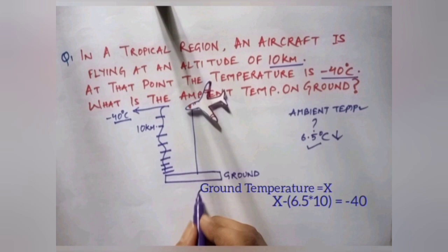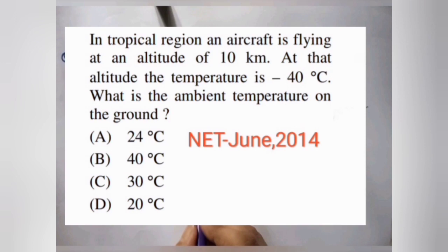So after solving this equation, x is equal to 25 degree celsius. But in this question there was no option for 25, so we will mark the closest value, that is 24, as the correct option.